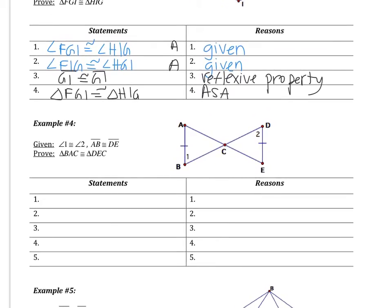Example four — please try this proof on your own. Pause the video and take about two minutes. When you come back: you should have marked that angle 1 is congruent to angle 2, marking it in the figure — that's given. Next, AB is congruent to DE — also given. So right now I have a pair of angles and a pair of sides.